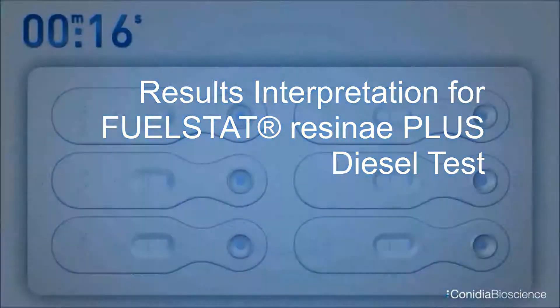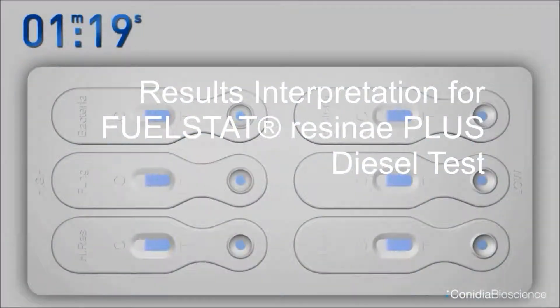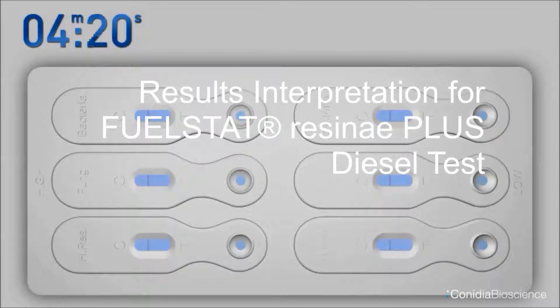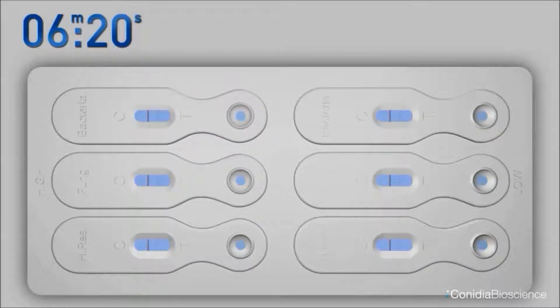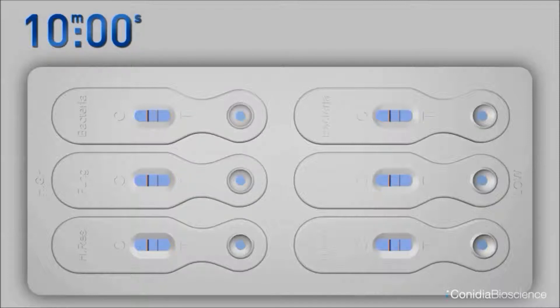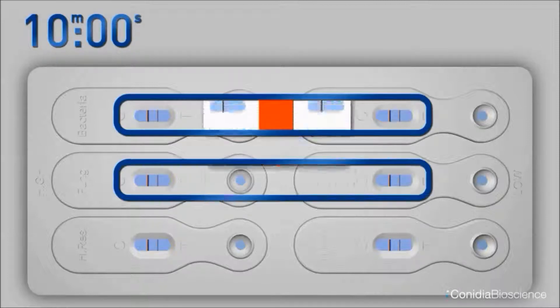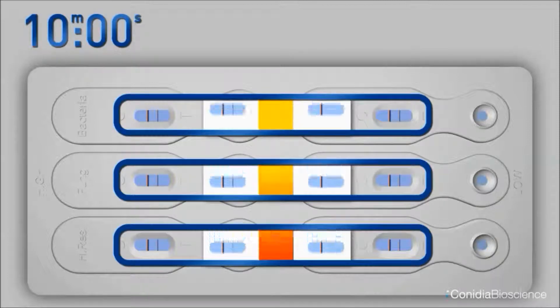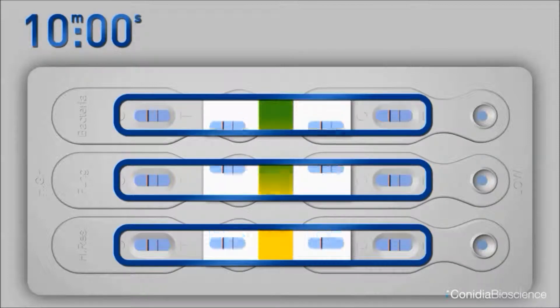Red lines will be seen to appear in the viewing window adjacent to the embossed C on the device. These are the control lines which indicate the test has activated. It is the appearance or otherwise of the faint test lines adjacent to the embossed T on the device which indicates the result.